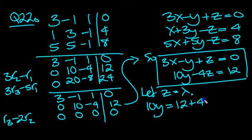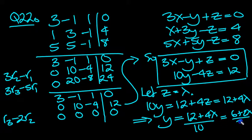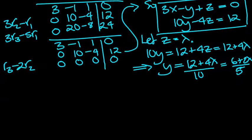So z is lambda, so 10y will equal 12 plus 4z, and that's 12 plus 4 lambda. So that tells us then y, divide by 10, you'll have 12 plus 4 lambda over 10, and you can cancel by 2 top and bottom: 6 plus 2 lambda over 5. There we go, there's y.